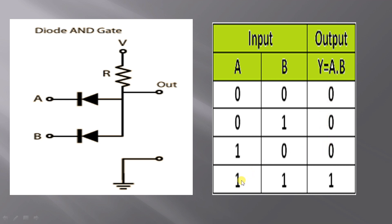The output is high only when all the inputs are high. The output is low when any of the inputs is low.